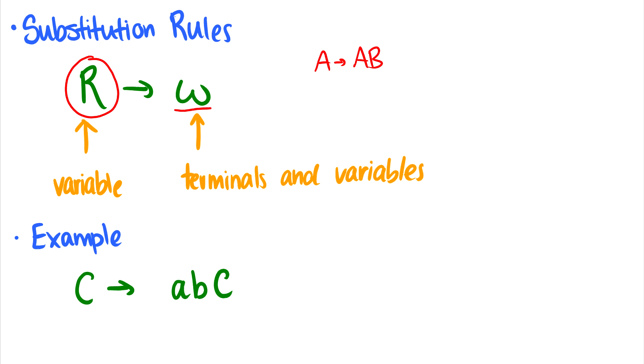We could have A going to some terminal a, or we could have A going to a combination of both. So another example down here is the variable C going to terminals a, b, and another variable C.